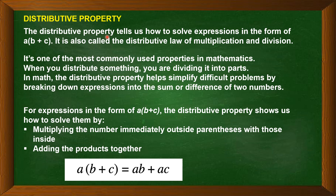The distributive property tells us how to solve expressions of the form a times (b plus c). It is also called the distributive law of multiplication because it breaks complex problems into simpler parts. When you distribute something, you are dividing it into parts. This is the most commonly used property in mathematics — it helps simplify difficult problems.